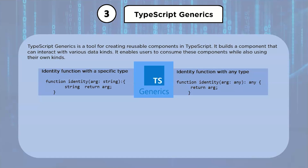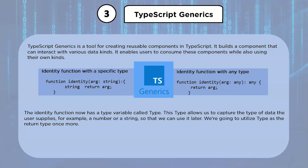To solve this, we need to capture the argument type so we can use it to signify what is being returned. We utilize a type variable, which is a form of variable that deals with types rather than values. The identity function now has a type variable called T. This allows you to capture the type the user supplies — for example, a number or a string — so you can use it later as the return type.